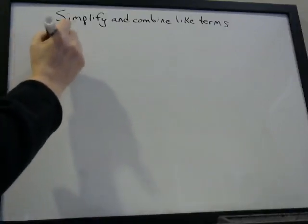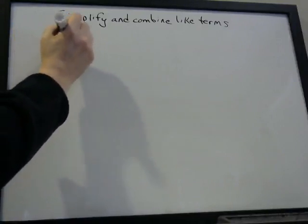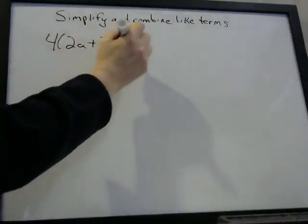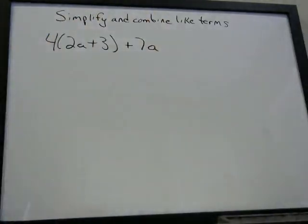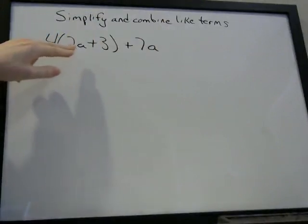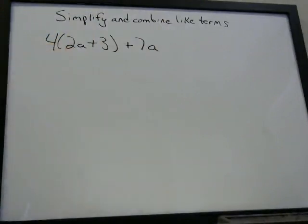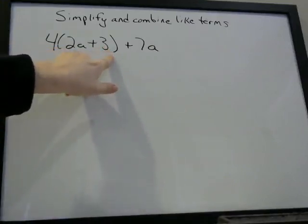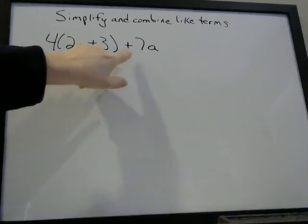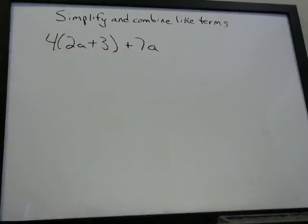So the first one is going to be something like this. A lot of times you're going to see the distributive property involved in these types of questions, so you need to be able to recognize the distributive property. If you don't know what that is or how to use it, watch that video on Facebook. So four times this mathematical expression 2A plus 3, plus 7A, and we need to simplify and combine like terms.